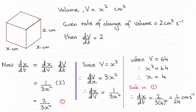Hi there. Now for this question, the answer for the rate of change of the length of this cube when the volume is 64 is 1/24, one twenty-fourth, centimeters per second.